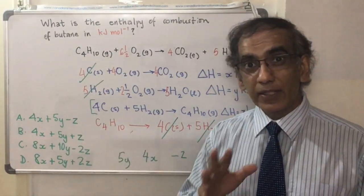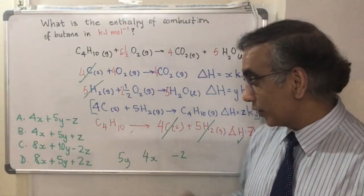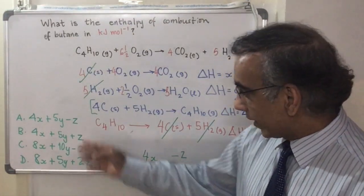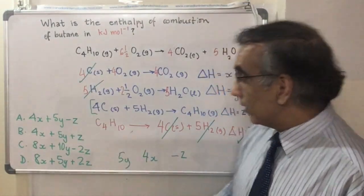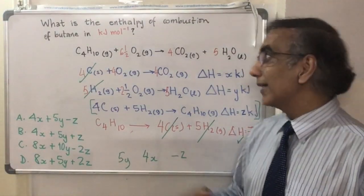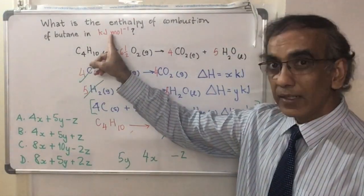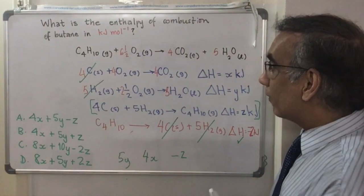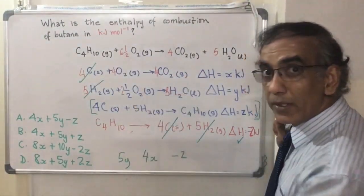The most popular distractor or wrong answer for this question is likely to be C, where everything is multiplied by two. Because students would have neglected the fact that this is kilojoules per mole. And then, of course, they wouldn't have divided everything by two.